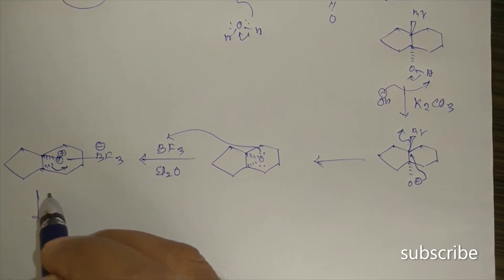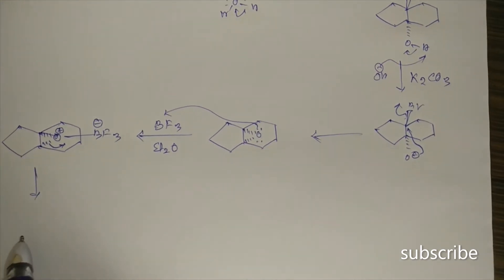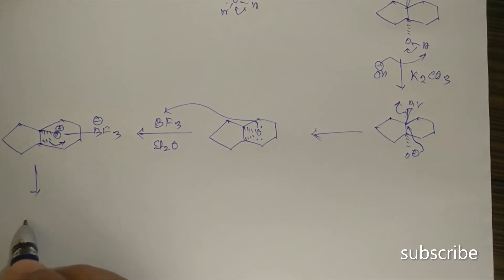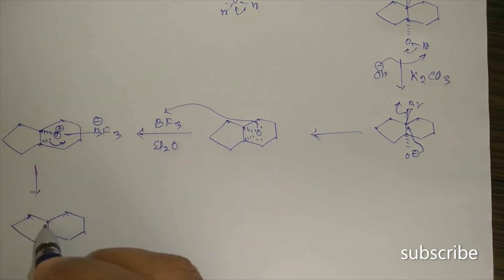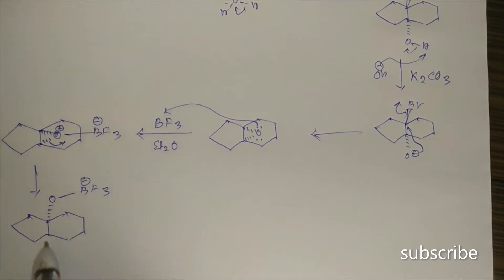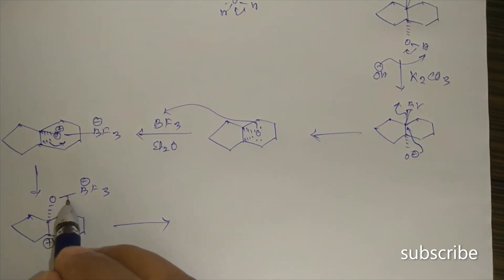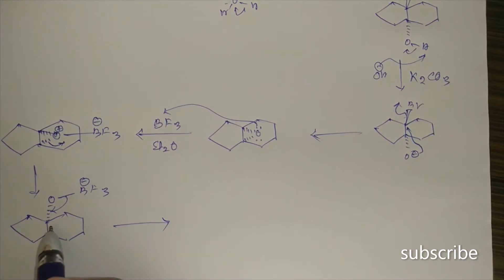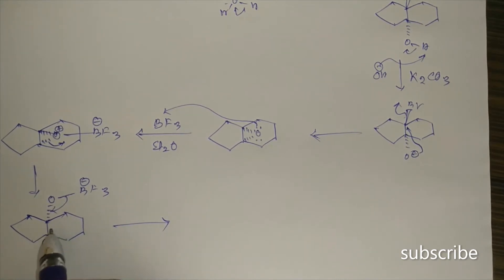We can open either bond. If we open this bond, the product has an OBF3⁻ on one carbon and a carbocation on the adjacent carbon. At this carbocation, a rearrangement will take place — either bond 'a' or bond 'b' can migrate to neutralize the positive charge.